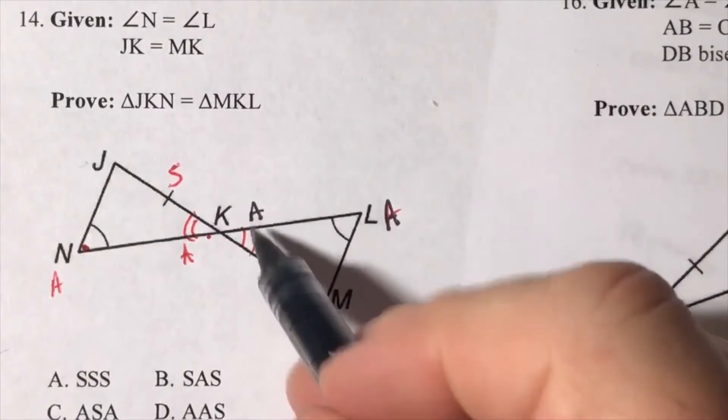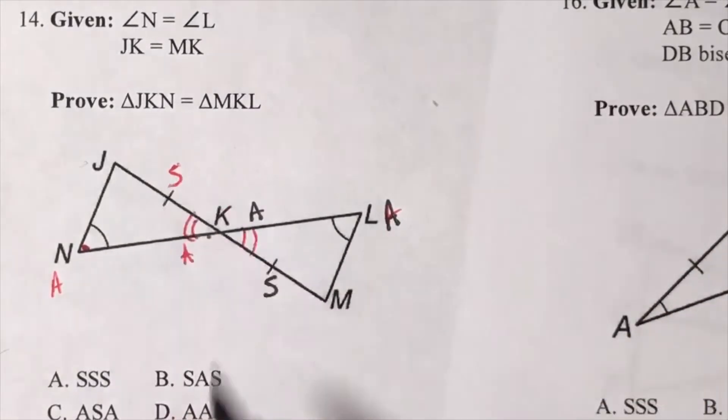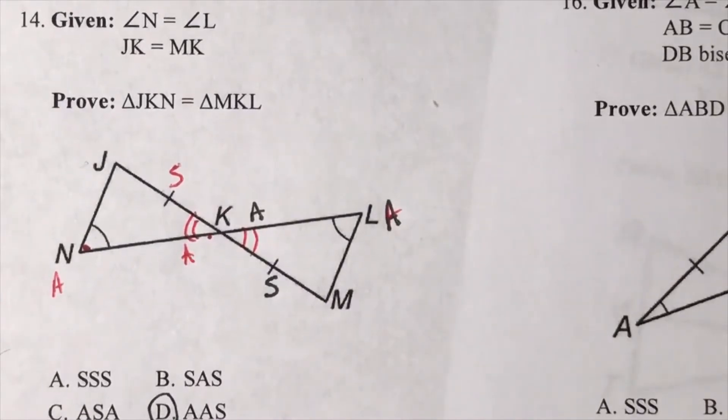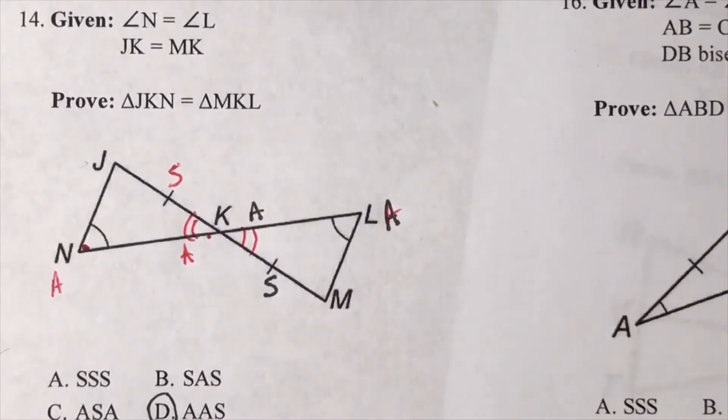So angle, angle, side and angle, angle, side. That means the triangles are congruent by the angle, angle, side theorem or postulate.